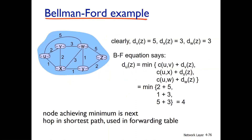For example, the source is u and the destination is z. We calculate: cev plus dvz, ceux plus dxz, and ceuw plus dwz, to find the minimum cost path from u to z.